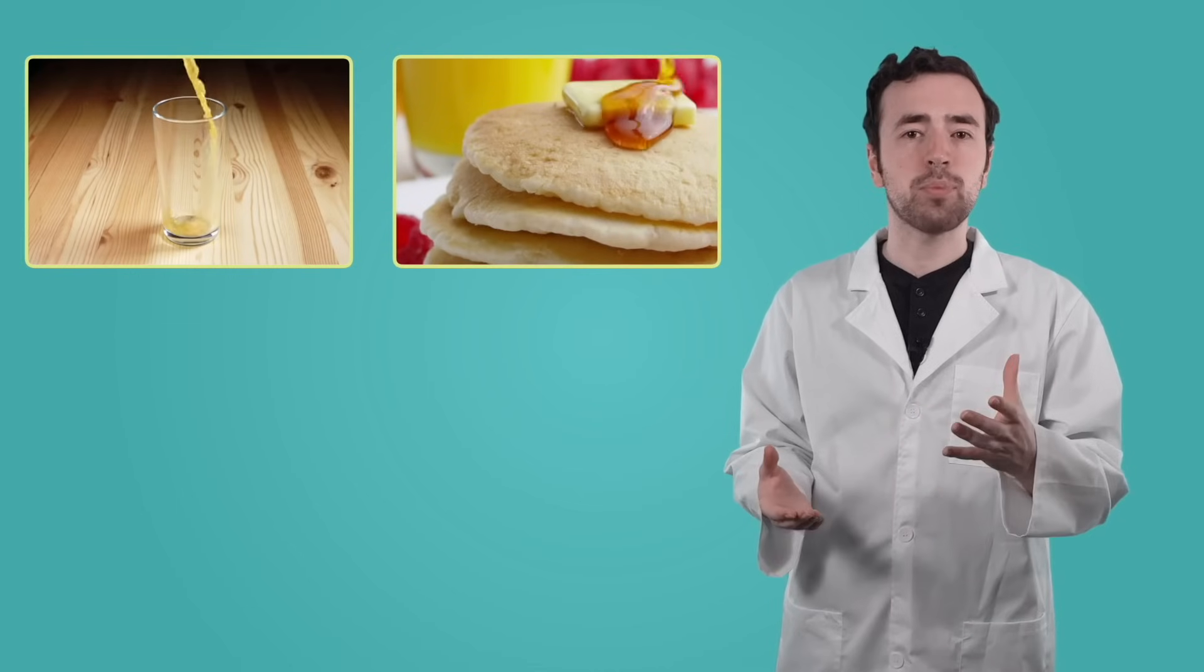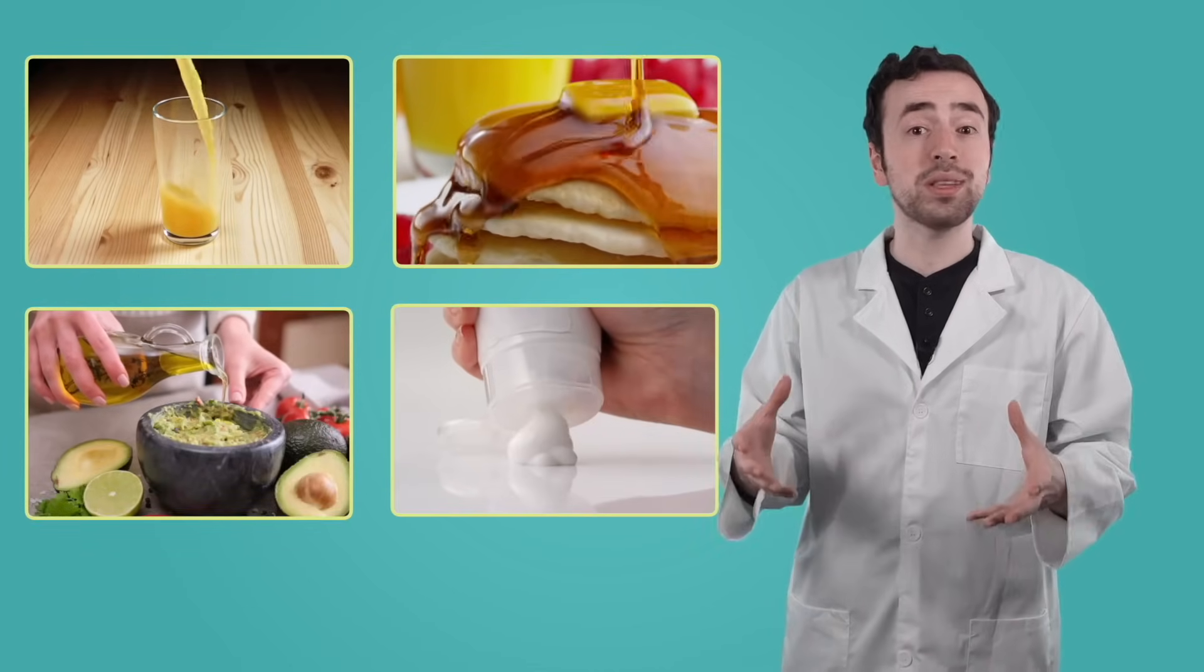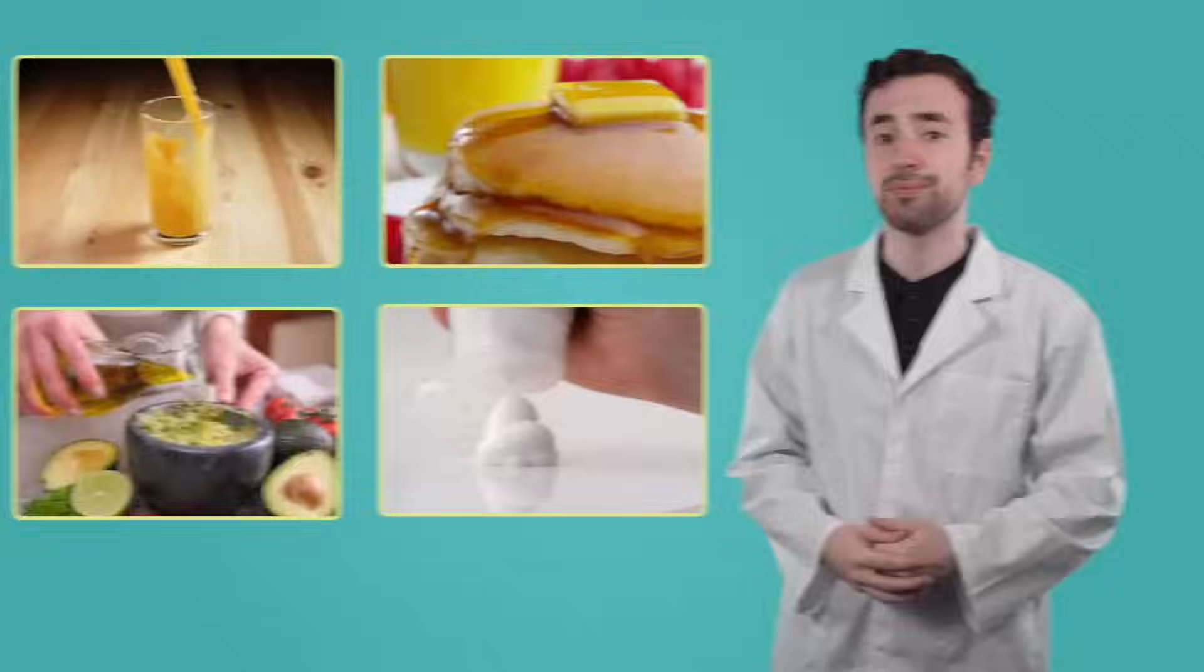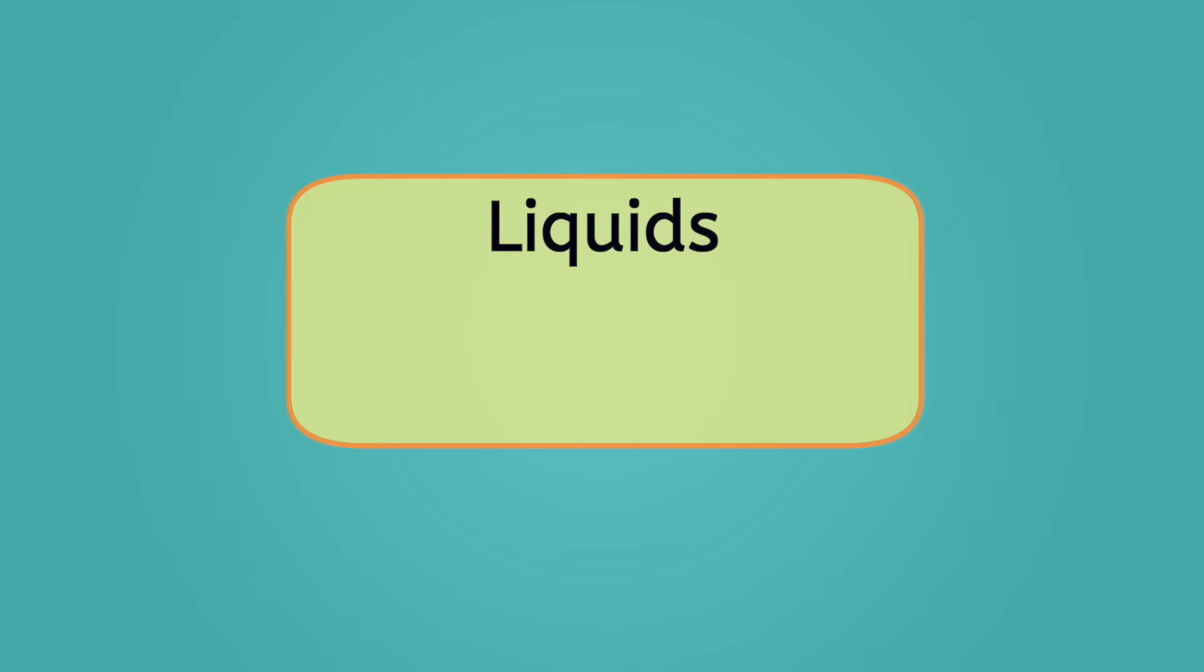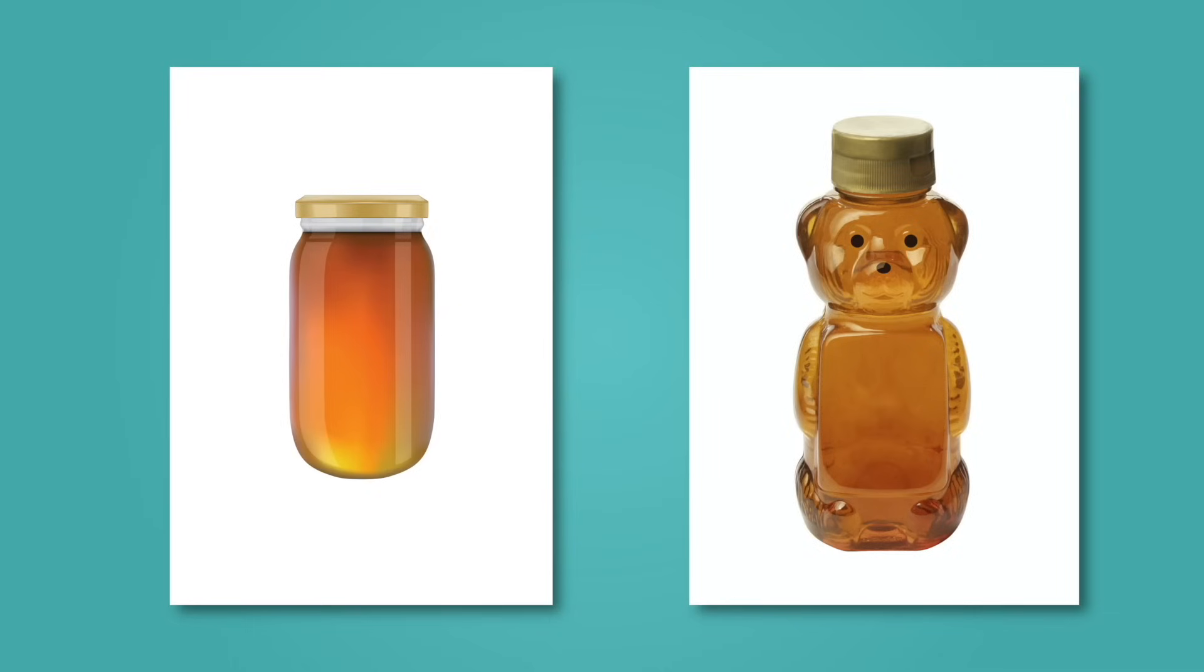If you've had anything to drink today, then you have already come across our next state of matter, liquid. Things like juice, syrup, oil, and lotion are all typically in the liquid states when we use them. Liquids have a definite volume, so they always take up the same amount of space. However, they don't have a fixed shape. If you pour a liquid into a cylindrical container, it will take the shape of a cylinder. Pour it into a bear-shaped container, and it'll take the shape of a bear. Liquids take the shape of whatever container they're in.